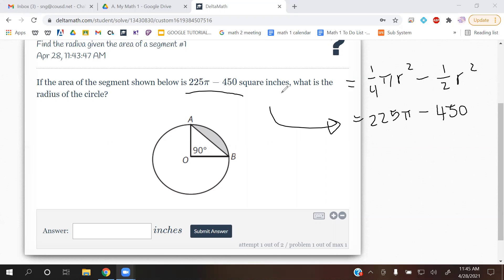I'm going to write this underneath because that is the area of the segment and this is the formula for the area of the segment. So it should be equal to 225π minus 450. Okay, so I'll just show you the easiest way.